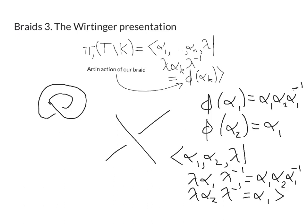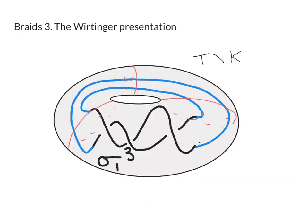So now that we've got the fundamental group of T minus K, we want to move from the solid torus T to the three-dimensional space R³ that contains it. So here's our knot sitting inside the solid torus again. What's the difference between T minus K and R³ minus K? Well the difference is there's this big gaping hole right in the middle of our torus.